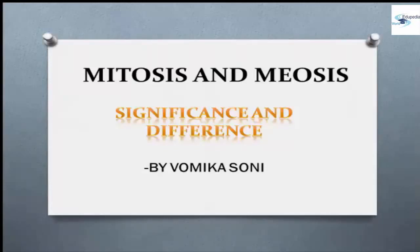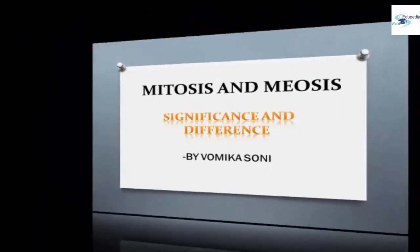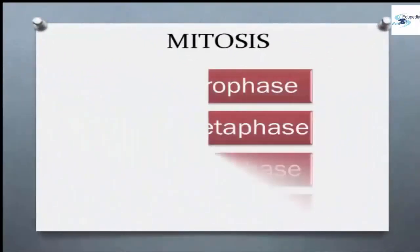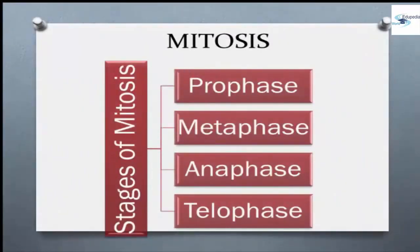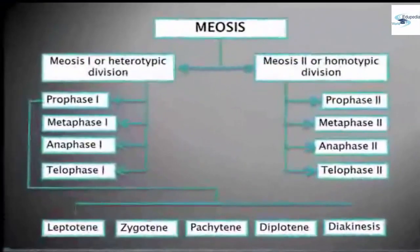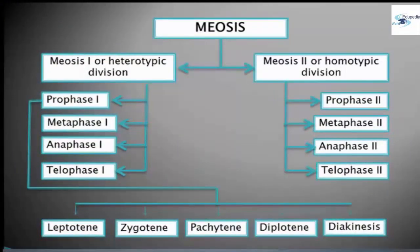In my previous video lectures, I have discussed about mitosis and its main stages such as prophase, metaphase, anaphase, and telophase. Also, I have explained about meiosis and its different divisions like heterotypic division and homotypic division, comprising of prophase 1, metaphase 1, anaphase 1, telophase 1, and prophase 2, metaphase 2, anaphase 2, telophase 2 respectively.